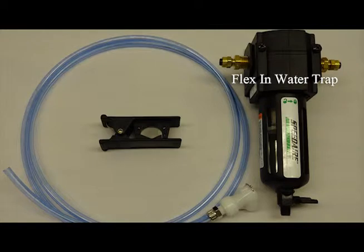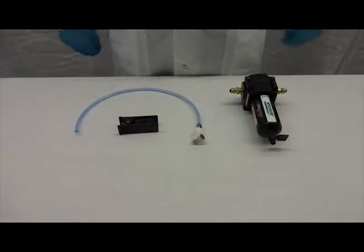The flex-end water trap has the one-fourth inch brass fittings connected. To connect a water trap in line with your flex-end tubing,